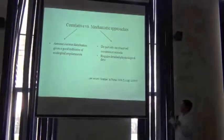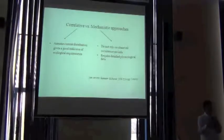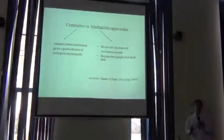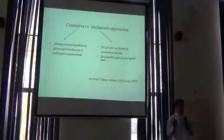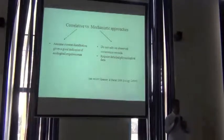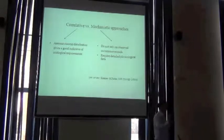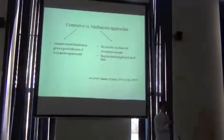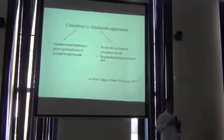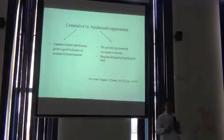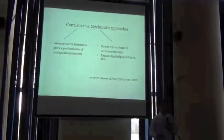We have to make this assumption that the current distribution — what we know about the occurrences — tells us something about the ecological requirements of the species. That's not always a perfect assumption; sometimes it can be a very poor assumption. But it makes sense as a fair starting point, and that's the kind of point we're going to be working with during the week.